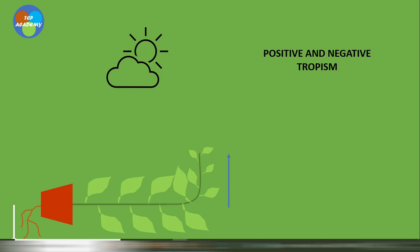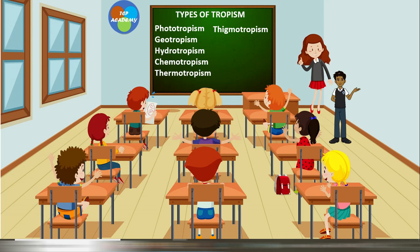This is all caused by the hormone we call auxin. When thinking about tropism, three things come to mind: it has directional growth, it is a growth movement, and it is irreversible.